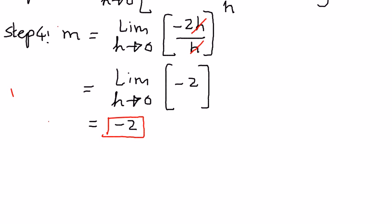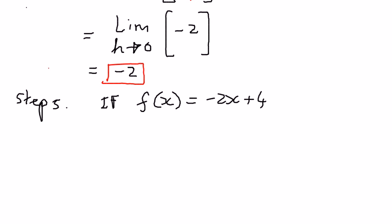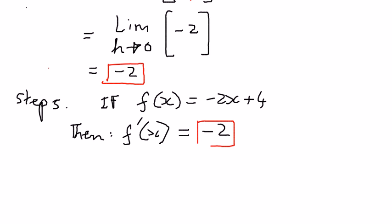As another step — step number 5 — the given function f of x was equal to negative 2x plus 4, then the first derivative, f prime of x, or the slope of this function, is going to be equal to negative 2. And that is how we find the derivative of this function using limits.